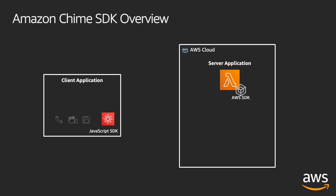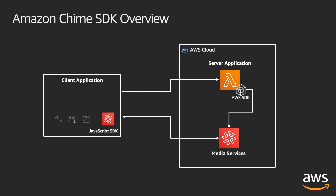You start by using the AWS SDK in your server-side application to create a meeting resource in one of the supported AWS regions. In response, you receive a meeting resource and set of media URLs that represent the media services used to host the meeting. Your server-side application can then authenticate and authorize each user joining the meeting session and create a corresponding attendee resource by using a unique identifier from your identity system. Each attendee of the meeting is assigned a unique join token that your server application will securely send back to the client application.